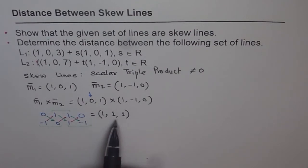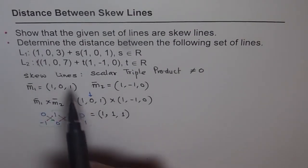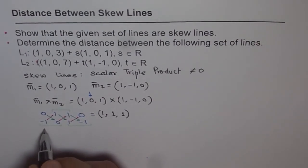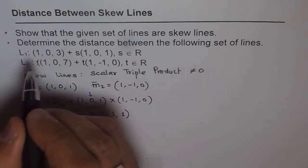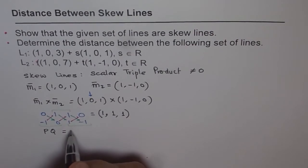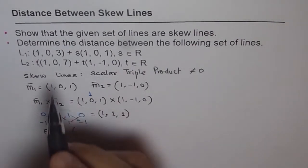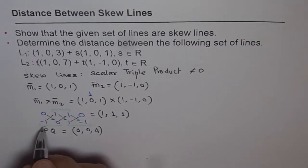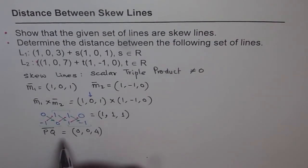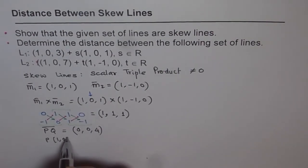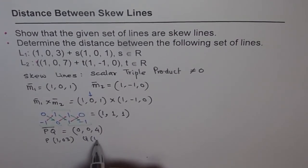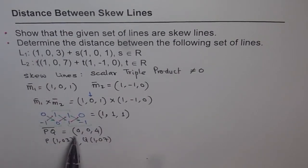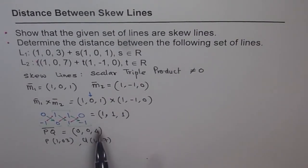Now let's do the dot product of M1×M2 with the vector joining the two given points, calling them P and Q. Point P is (1, 0, 3) and Q is (1, 0, 7). So PQ = Q − P = (1−1, 0−0, 7−3) = (0, 0, 4).